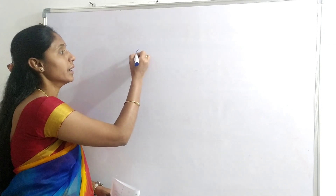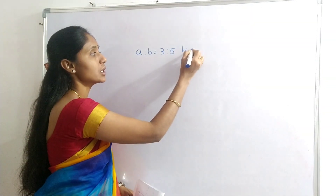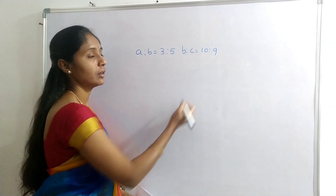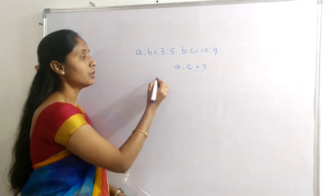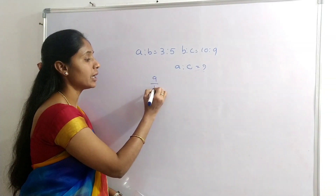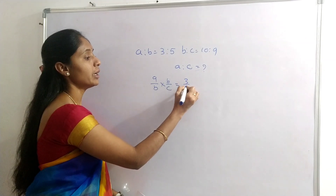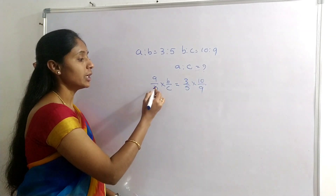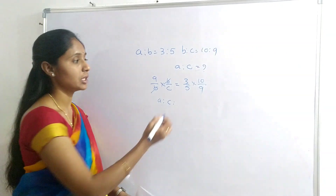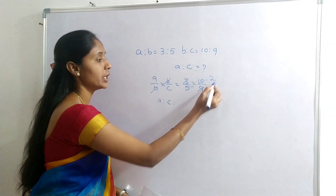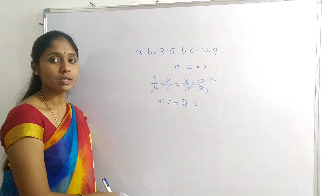Next question: A:B = 3:5 and B:C = 10:9. Find A:C. We can write (A/B) × (B/C) = (3/5) × (10/9). B cancels, leaving A/C. Simplifying: 3×10 = 30 and 5×9 = 45, giving 30/45 = 2/3. So A:C = 2:3.